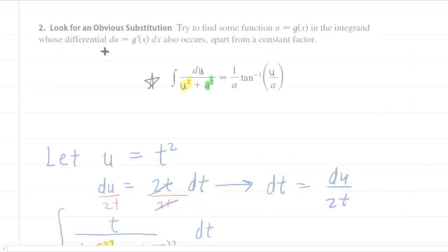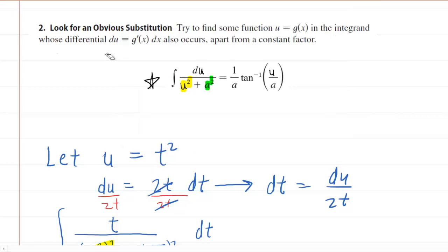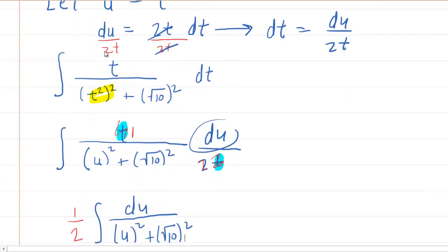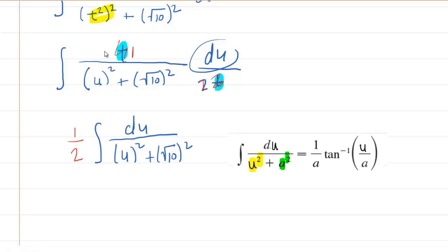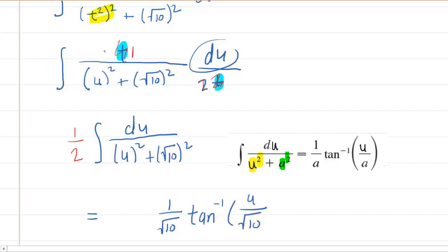So what we'll do is copy and bring that down here so we can compare it side by side with what we have. We've got the du over the u squared plus constant squared. We can clearly see from this formula that that's going to equal 1 over our constant. So we're going to have 1 over our constant of radical 10 times the inverse tangent of u over that very same constant, radical 10.